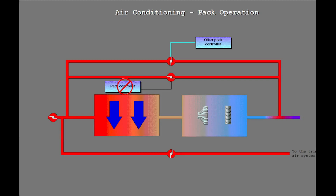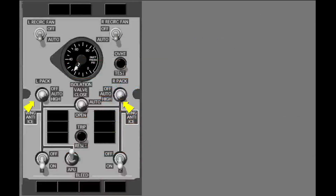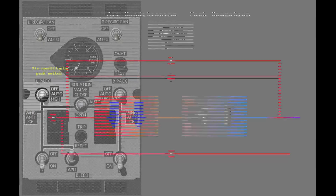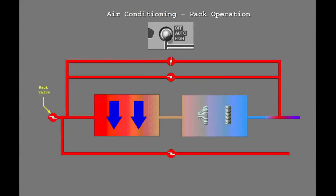Before the pack, some of the bleed air is sent to the trim air system to control the temperature of the cabin zones. The trim air system is discussed in another lesson. To control the bleed air that goes into the pack, you use the air conditioning pack switches on the air conditioning bleed air controls panel. The air conditioning pack switch controls the related pack valve.